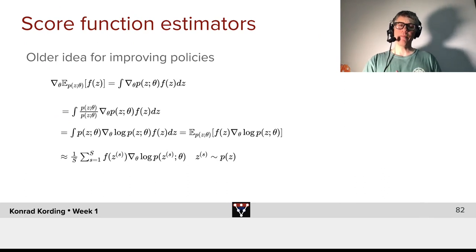So, let's say we want to optimize a policy. How could we do that? Well, we can calculate the gradient after the parameters theta of our policy of the expected value for the induced probability distribution from that policy that depends on z and theta.